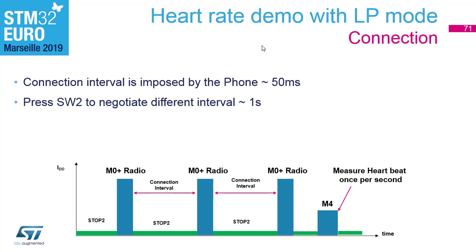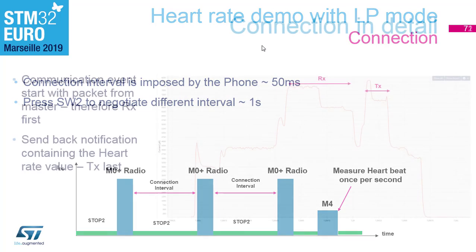You can press Switch 2, which will negotiate a different connection parameter — one second interval. Now in the consumption trace you can see two types of events every second: the M0+ and radio waking every second, and the M4 also waking every second to pretend to measure the heartbeat. So you will see two types of peaks with a frequency of one second.